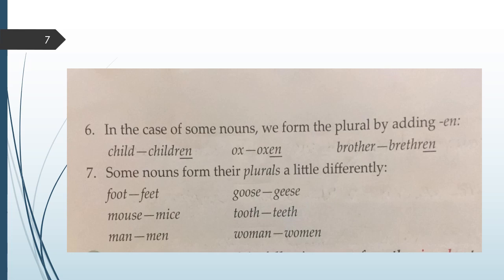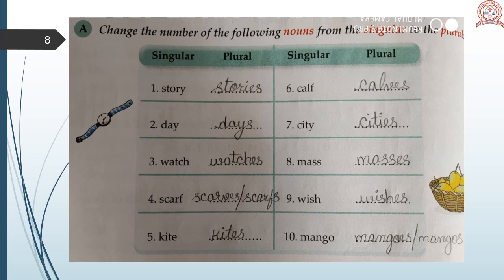Some nouns form their plurals a little different. Foot, feet. Mouse, mice. Man, men. Goose, geese. Tooth, teeth. Woman, women. Change the number of the following nouns from the singular to the plural. So students, here they have given singular nouns and we have to change them in plural nouns. Story, stories. Day, days. Watch, watches. Scarf, scarfs and scarves. Kite, kites. Calf, calves. City, cities. Mass, masses. Wish, wishes. Mango, mangoes and mangos.